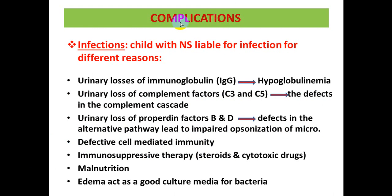The most common complication of nephrotic syndrome is infection, and infection is the most common cause of death in these cases. Patients are more liable to infection for several reasons: urinary losses of immunoglobulins, especially IgG, lead to hypoglobulinemia; urinary loss of complement factors C3 and C5 leads to a defect in the complement cascade; and urinary loss of properdin factors B and D leads to a defect in the alternative pathway, resulting in impaired opsonization of microorganisms.